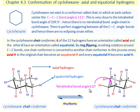Hence, there is no tetrahedral bond angle strain in cyclohexane.